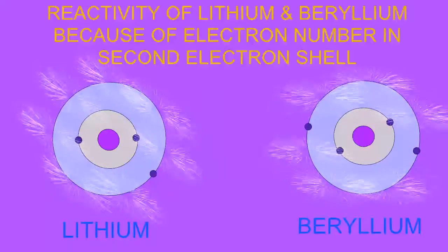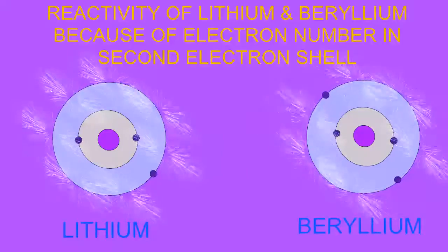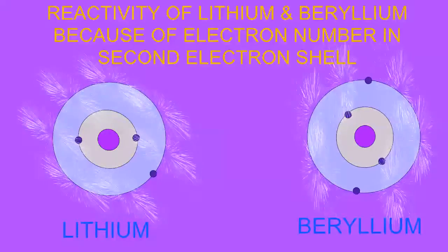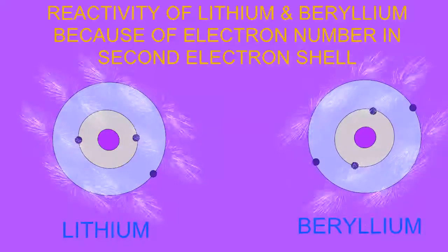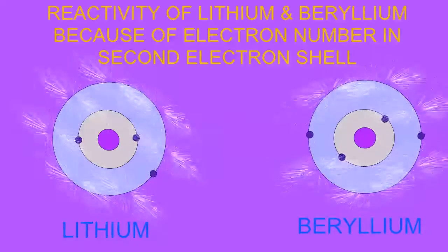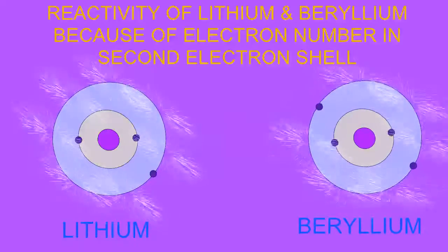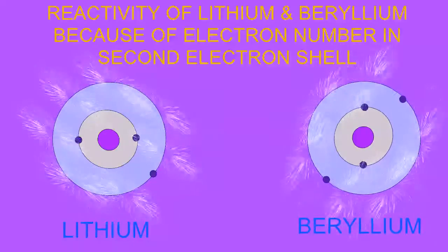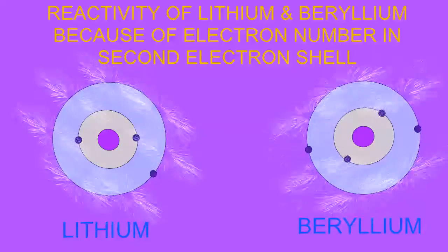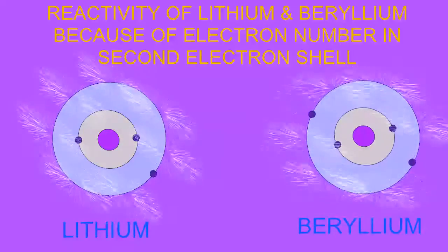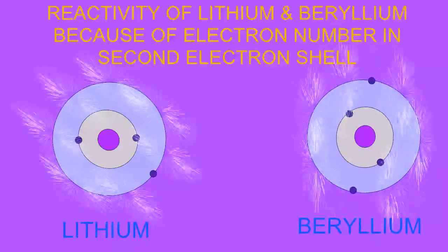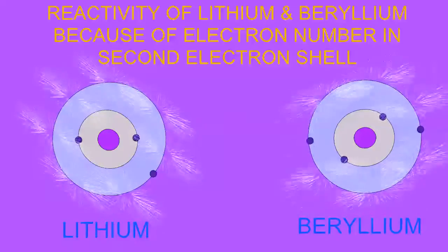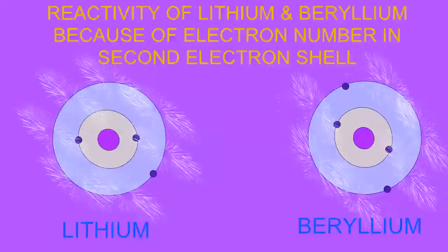The atom beryllium possesses four electrons, and so its first shell and its 1s orbital contains the maximum number of two. The second shell, which can fit a total of eight electrons, has two electrons in the 2s orbital, but this is all.